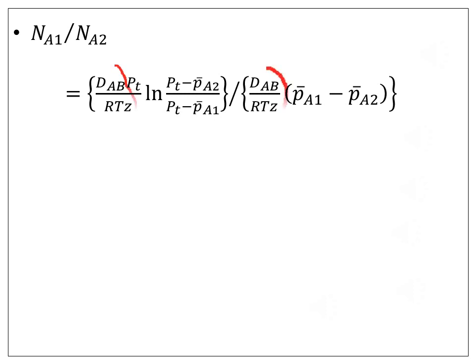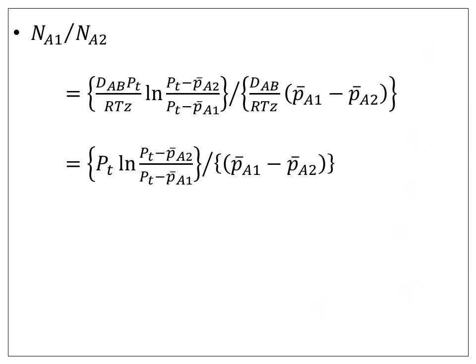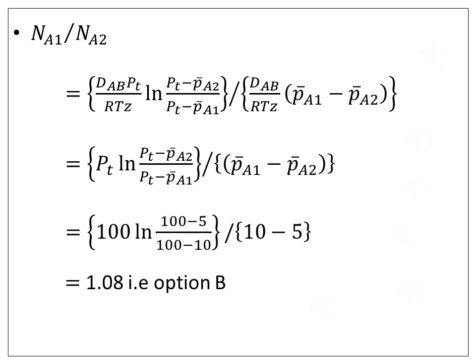The term DAB/(RTZ) cancels out, and the expression reduces to Pt ln[(Pt - PA2)/(Pt - PA1)] divided by (PA1 - PA2). Putting the values of total and partial pressures into the expression, we get the result as 1.08, which is option B. Thank you.